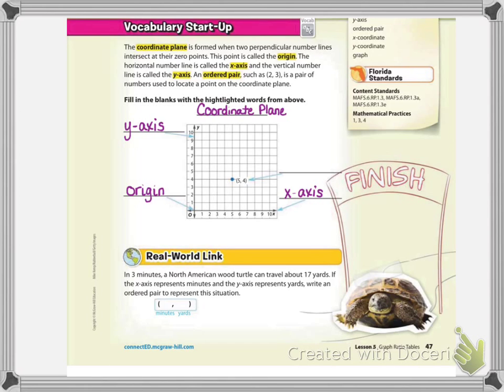Now any point that's done on the actual coordinate plane is called an ordered pair. Now there's a reason why it's called an ordered pair. Think of the word order. That means something has to go in order. So you're going to realize in a moment or two as we continue that the way that you write the numbers within an ordered pair matters because it has to be in an ordered pair of the x number going first and then the y number coming second.